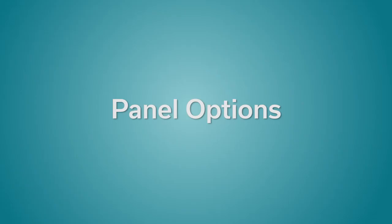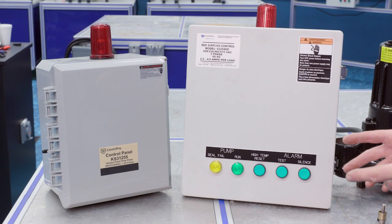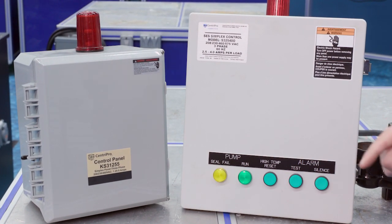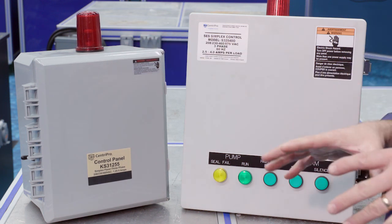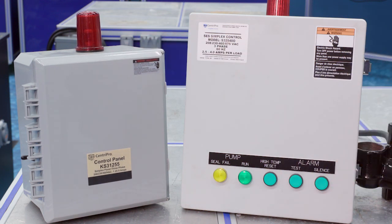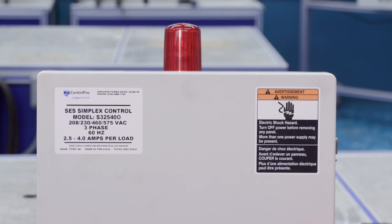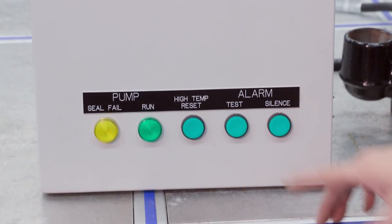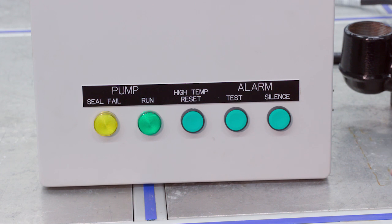For your panel, you have two basic options. Panel A would have the seal fail sensor in the panel and the thermal sensor in the panel, so there would be notification of an issue with the thermal or the leak detection. Panel B does not have those sensors but can still be used as an alternative. Option A would be a panel like this that has a seal fail indicator and a thermal indicator in the panel itself.